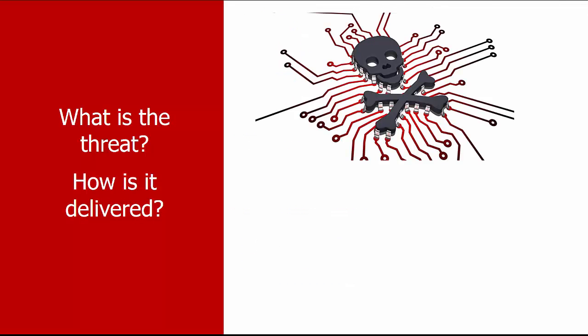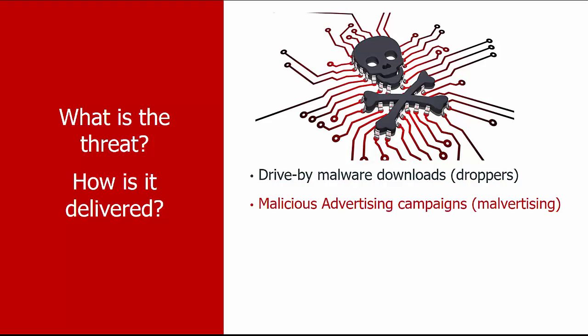So what exactly are we talking about here? We're talking about drive-by malware downloads, malicious advertising — also known as malvertising — spam campaigns, which is the delivery of malware through email, and of course ransomware. All of these have in common the delivery mechanism, which is an exploit kit.